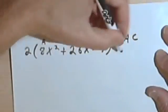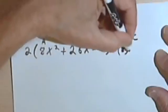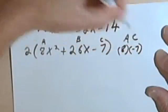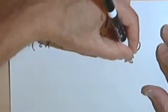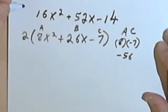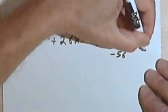AC is 8 times negative 7. That's going to give me a negative 56. Pay attention to the signs. And my B is a 26.